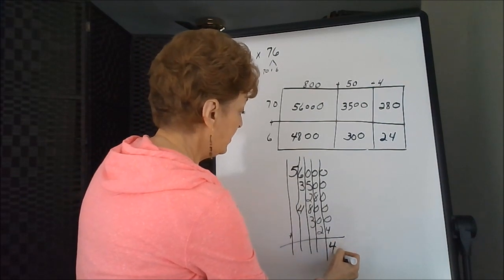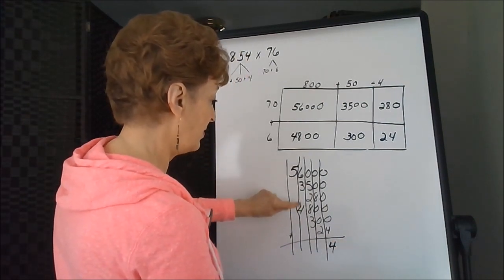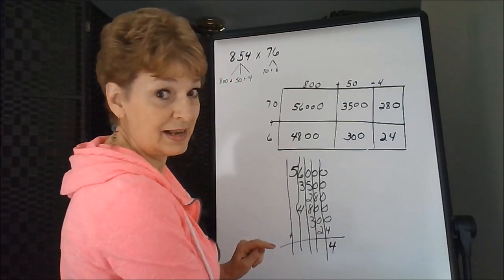All right, so it's 4. It's easy to do, isn't it, where you just get a little bit sloppy with your writing. And then it can be confusing.